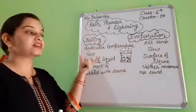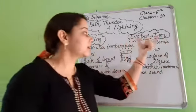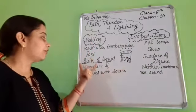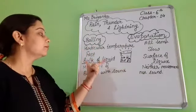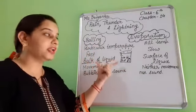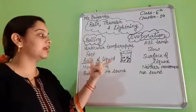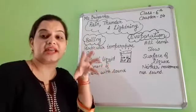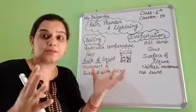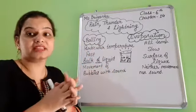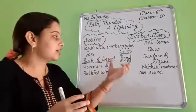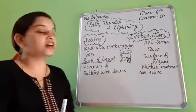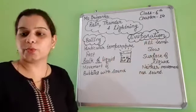Boiling is a fast process and evaporation is a slow process. Boiling takes place in the bulk of the liquid — when water is in a large amount, then we boil it. But evaporation takes place at the surface of the liquid.